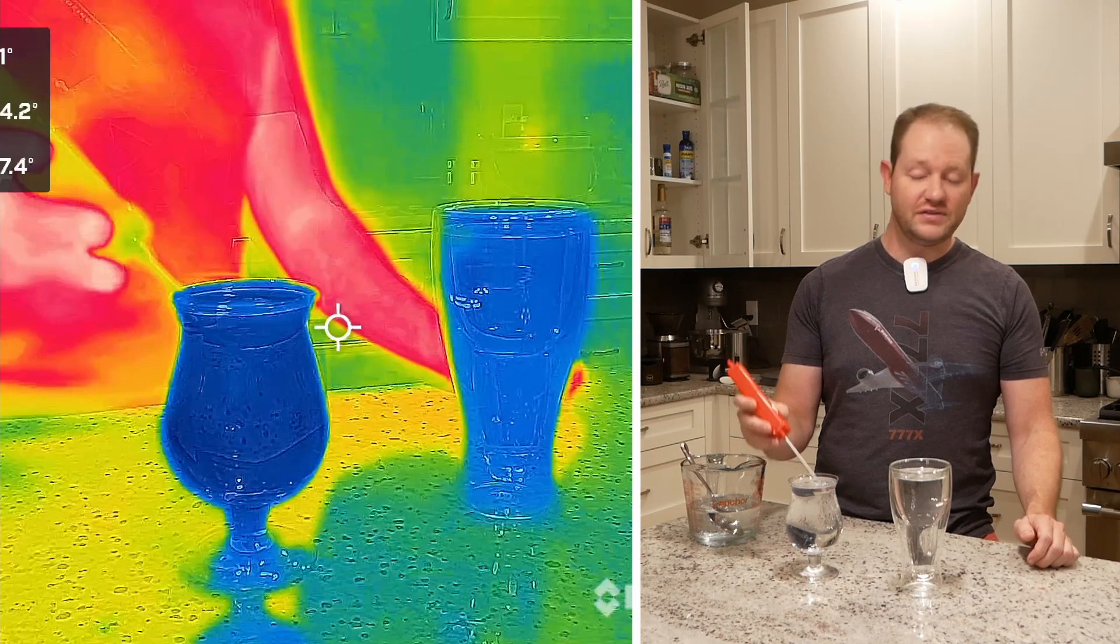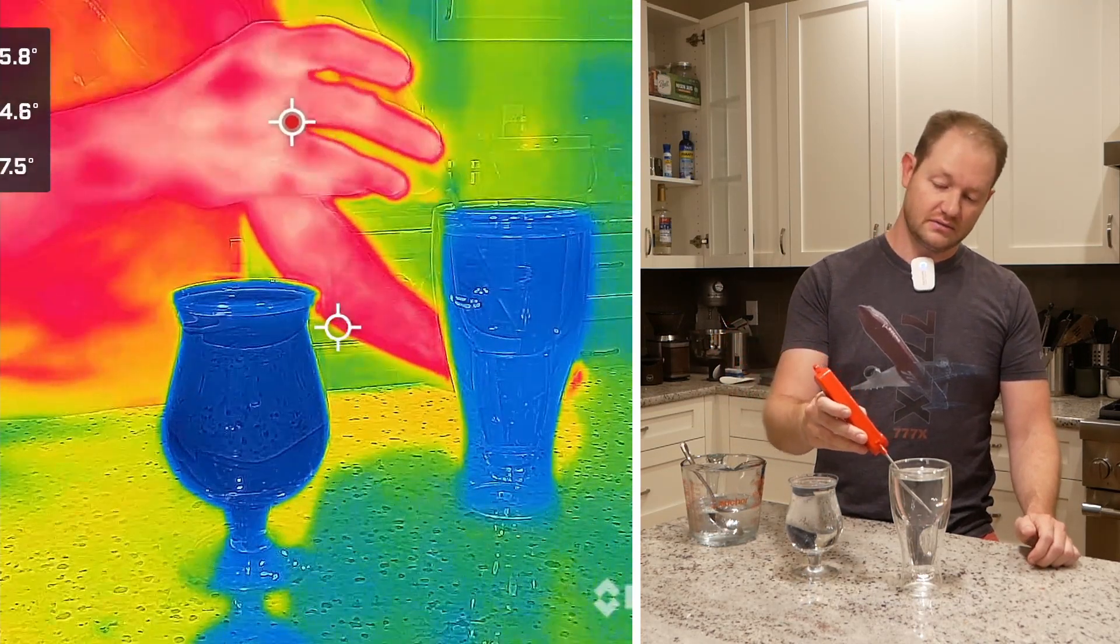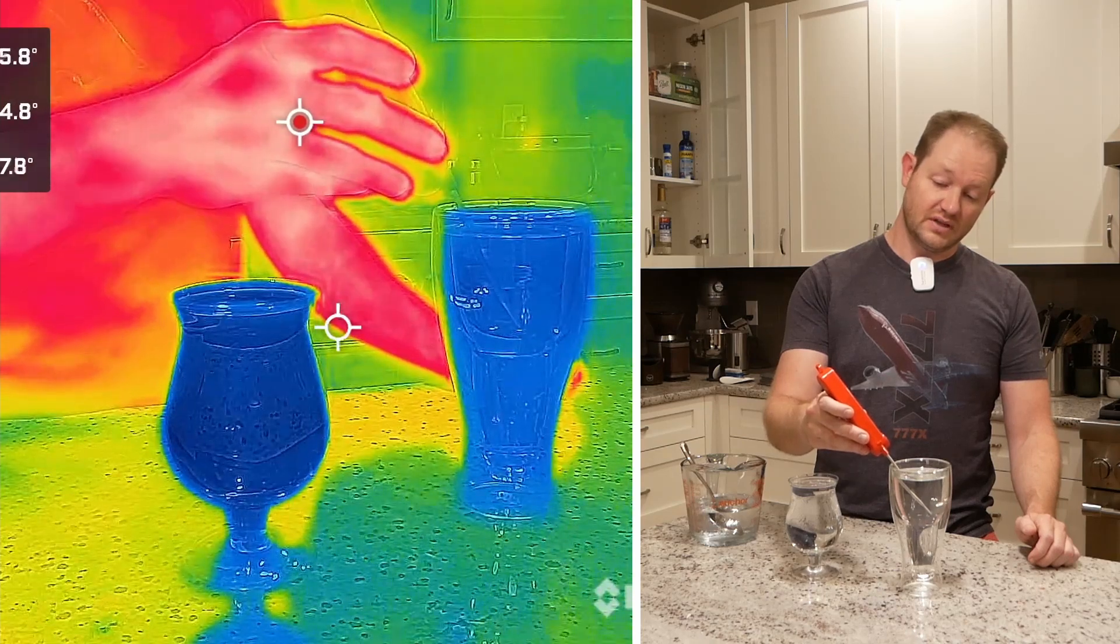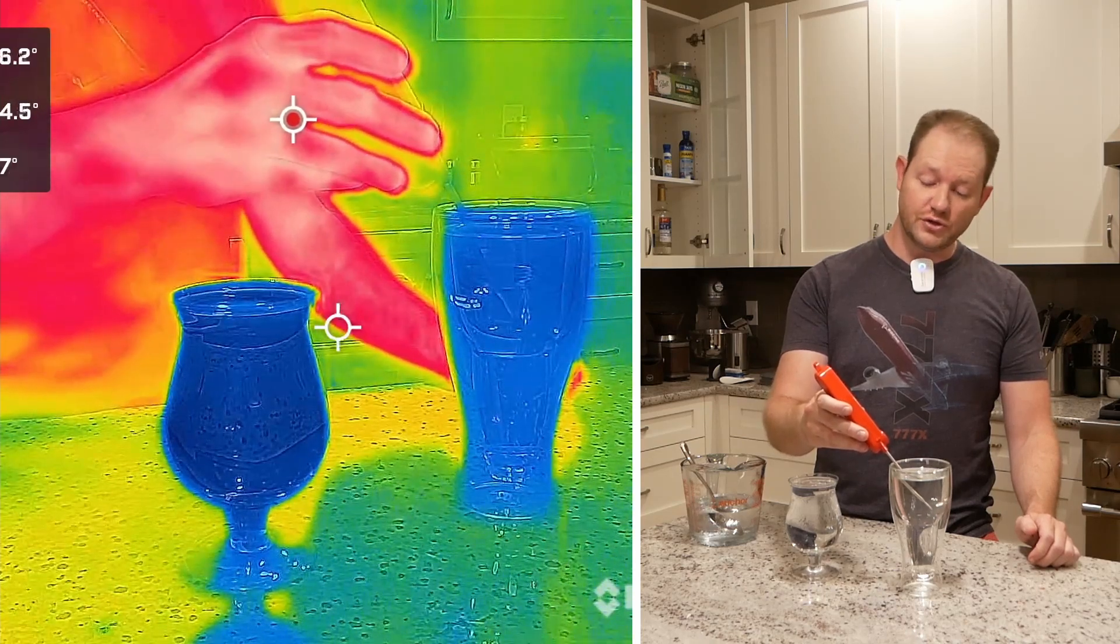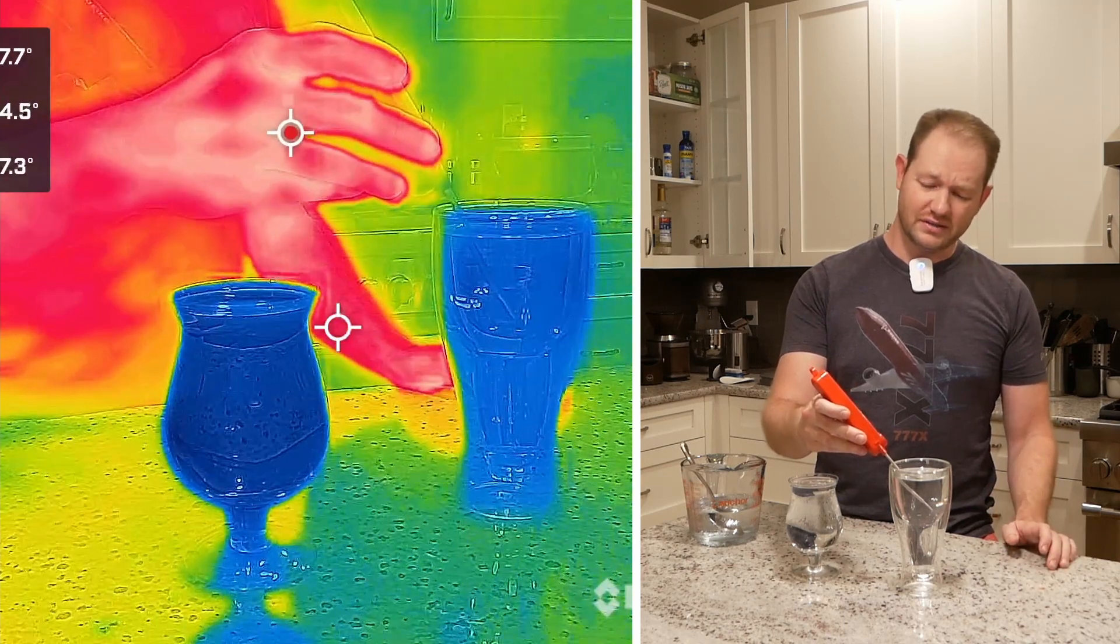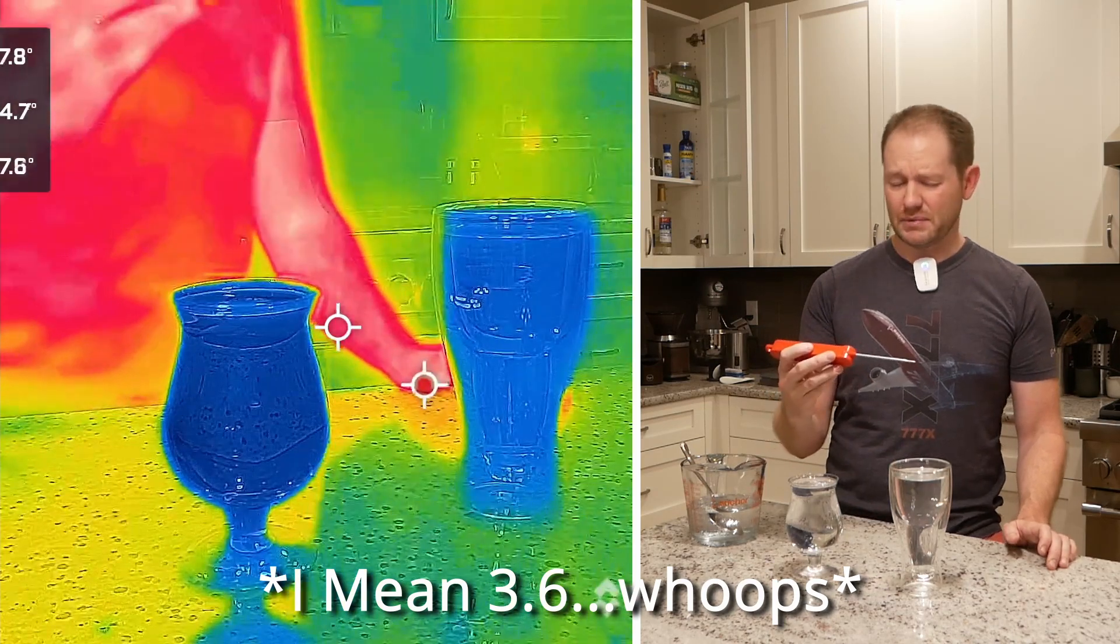We're looking at 58.8 for the uninsulated. 55.2 on the insulated. So what is that? That's only a 2.6 degree difference. I did my math right.